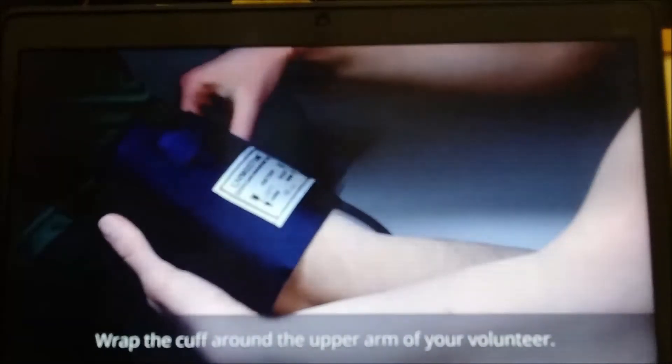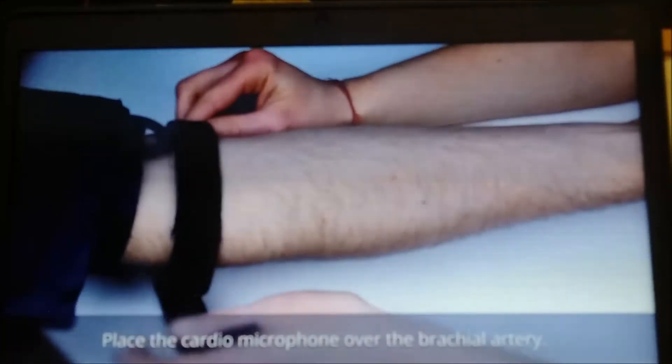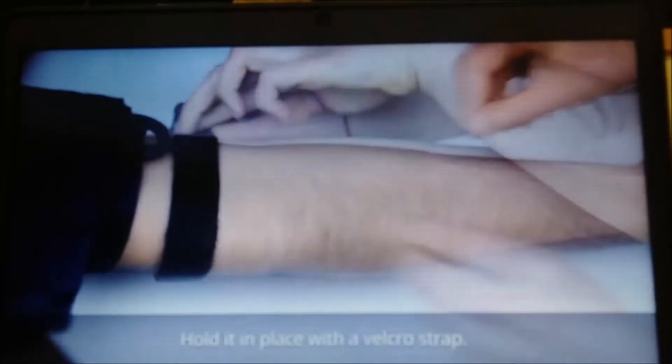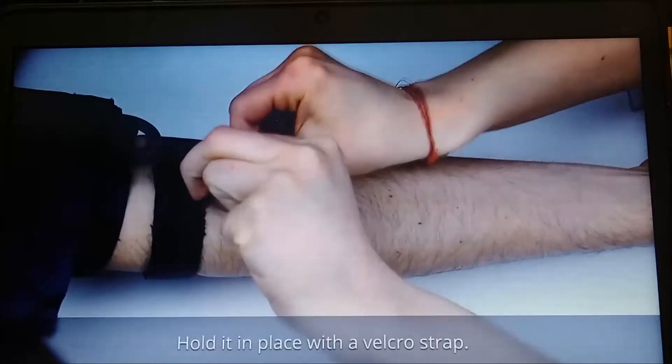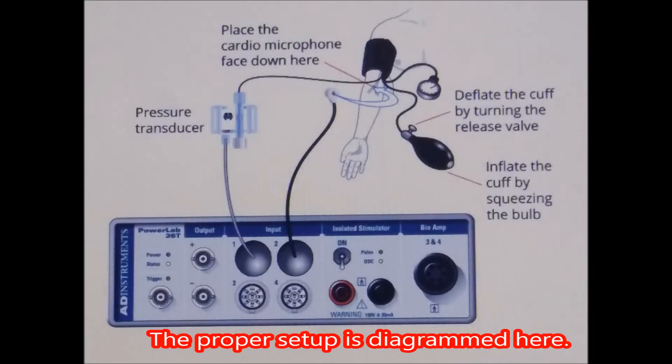Wrap the cuff around the upper arm of your volunteer. Place the cardio microphone over the brachial artery. Hold it in place with a Velcro strap. The proper setup is diagrammed here.